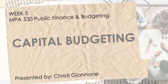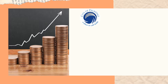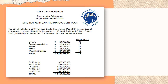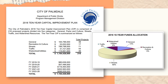Capital projects are improvements or additions to the city's physical assets. For the city of Palmdale, they have a 10-year CIP that starts in 2018 and runs through 2028. The annual update process for the city of Palmdale begins in October of each year and involves city council members, planning commission members, and city staff being asked to provide input on revisions to the current CIP or any new projects that have been identified.